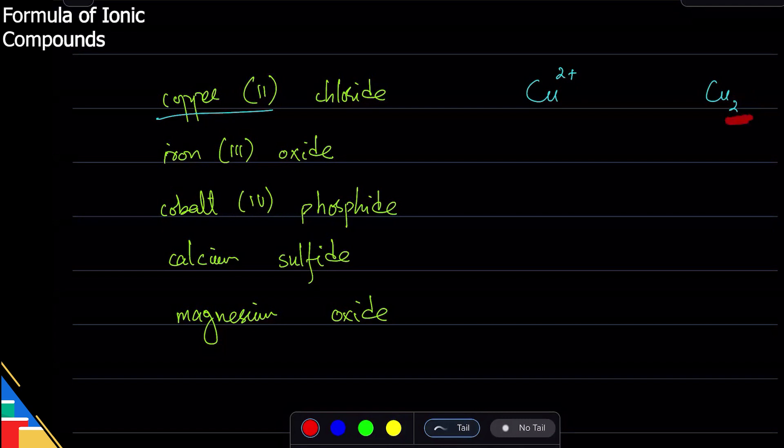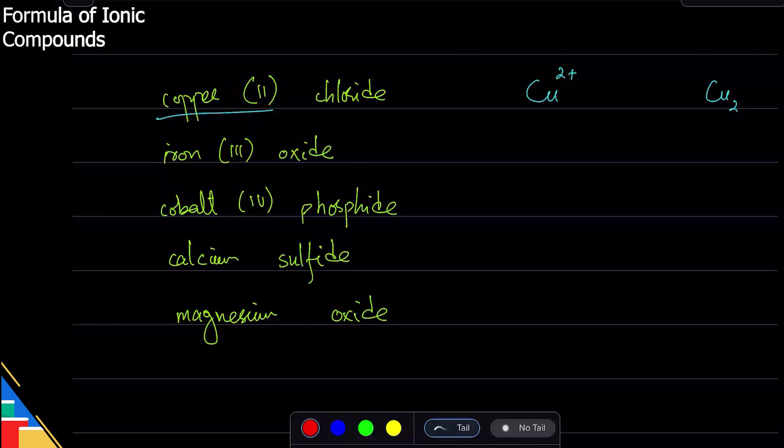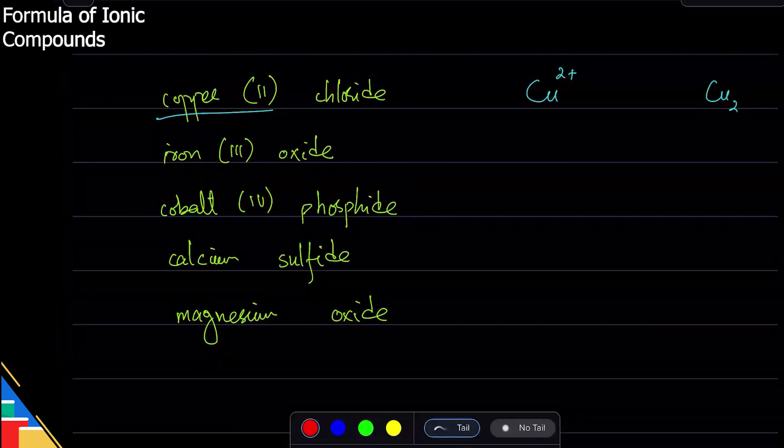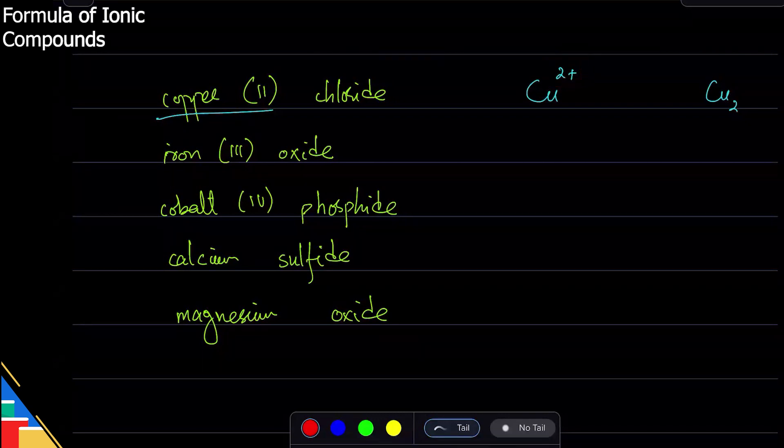This tells me there are two copper atoms or two copper ions. It tells me the number of these things. It does not tell me the charge. The number here at the top is the charge, so write the charge there.